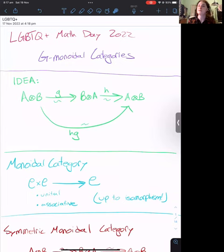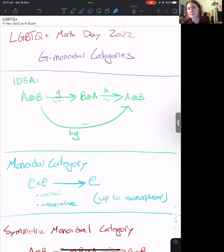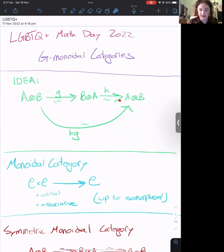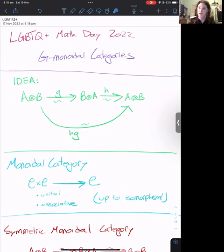The idea of a G-monoidal category is that this is a category which has a notion of tensor product, meaning that if I have two objects A and B, I have some object A tensor B. And specifically, we would like there to be commutativity isomorphisms relating A tensor B to B tensor A. I want to associate these isomorphisms to group elements from some group G. I've drawn a diagram here: A tensor B is related to B tensor A via an isomorphism G, and B tensor A is related to A tensor B via an isomorphism H. If I compose these isomorphisms, I get an isomorphism relating A tensor B to itself, associated to the group product of those two group elements.